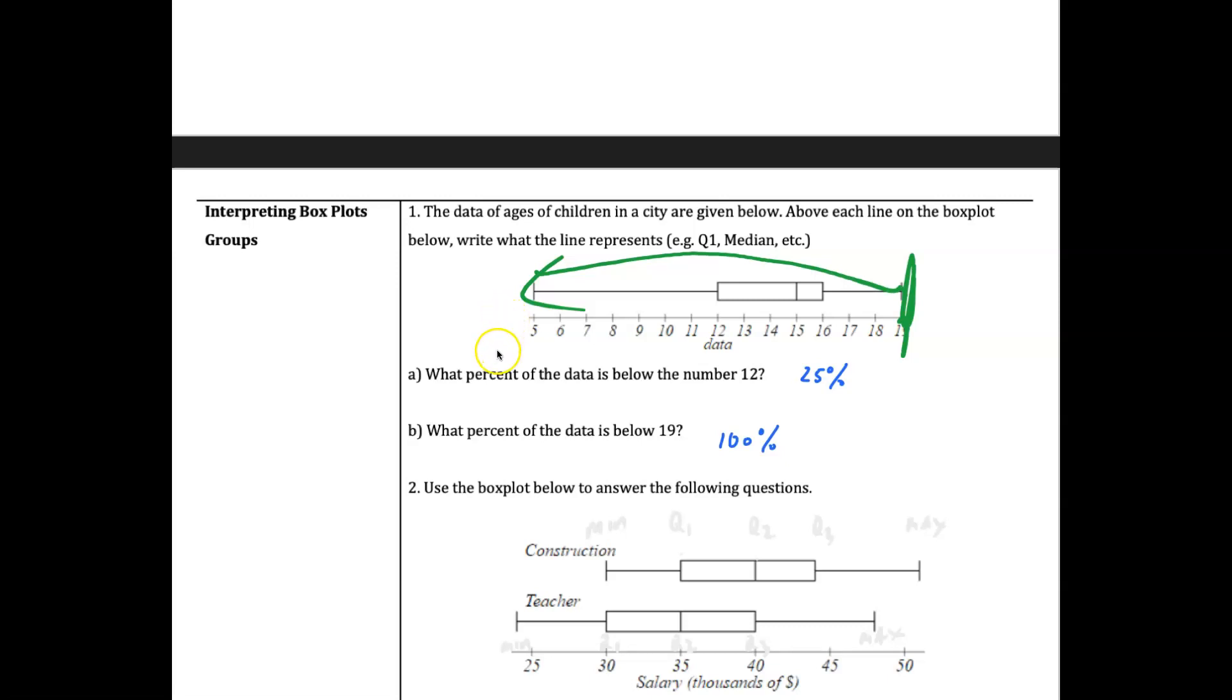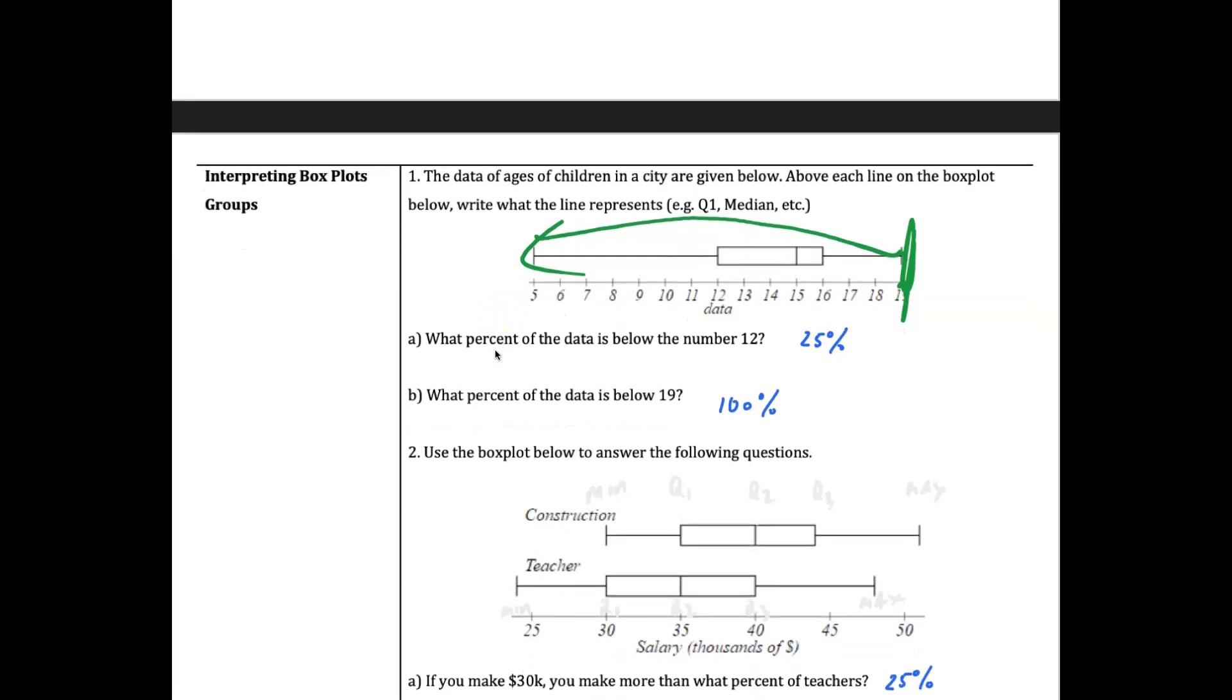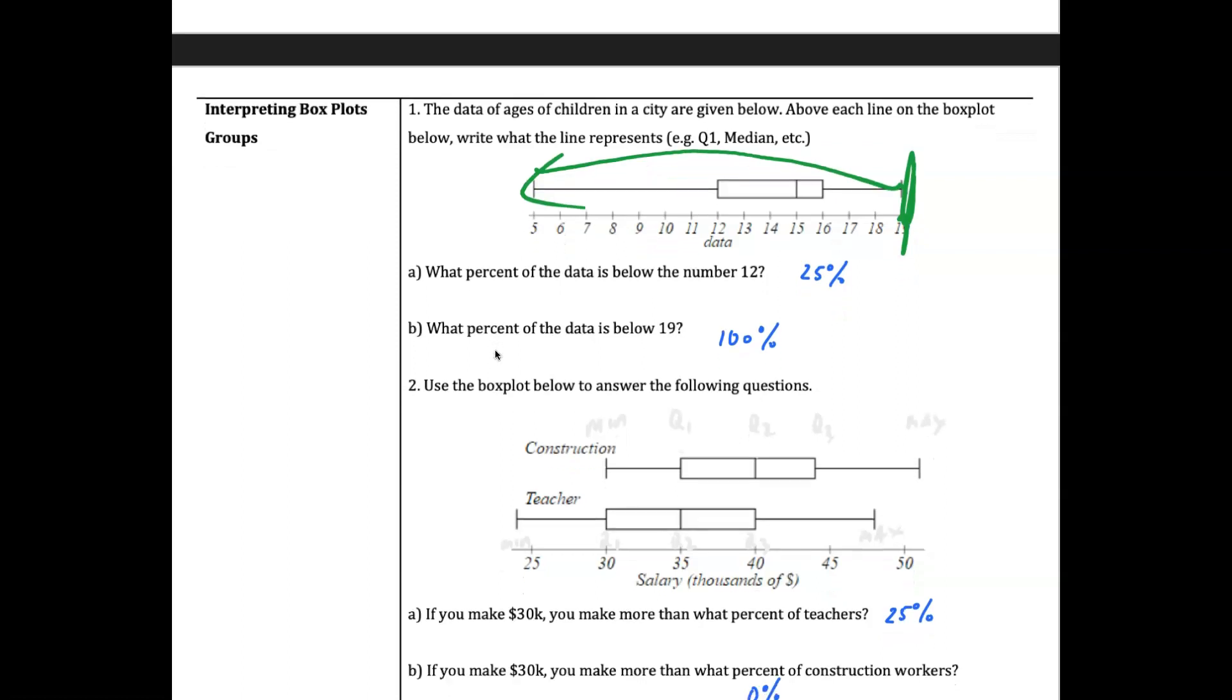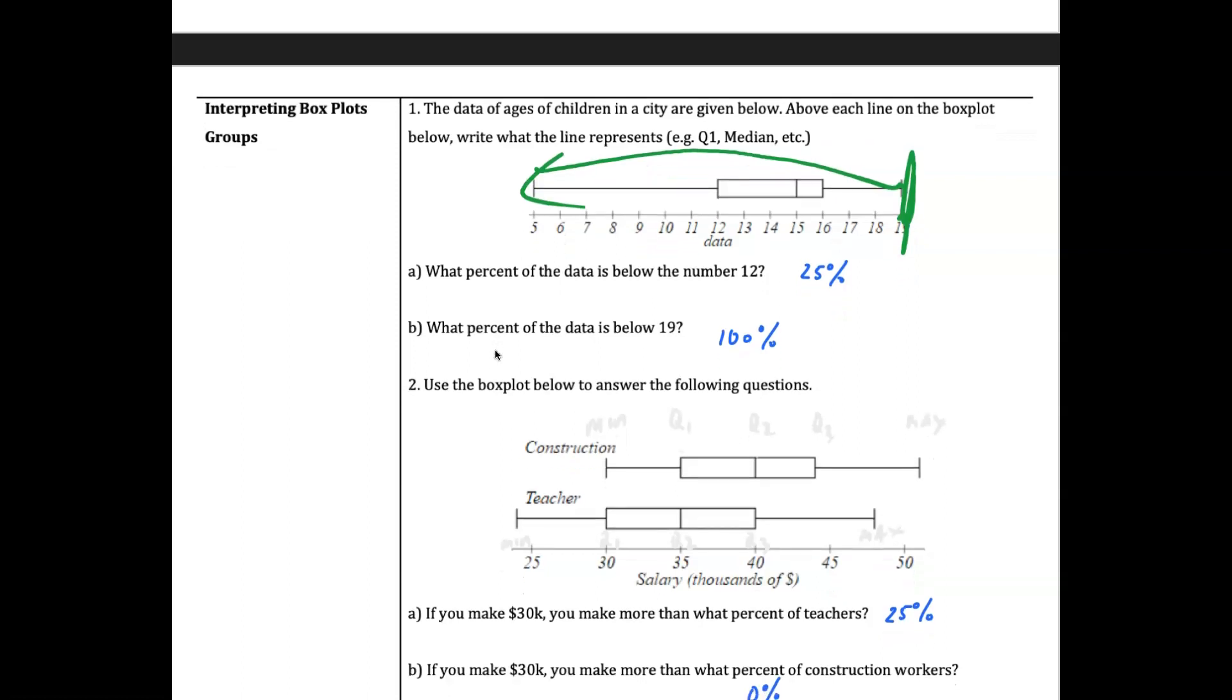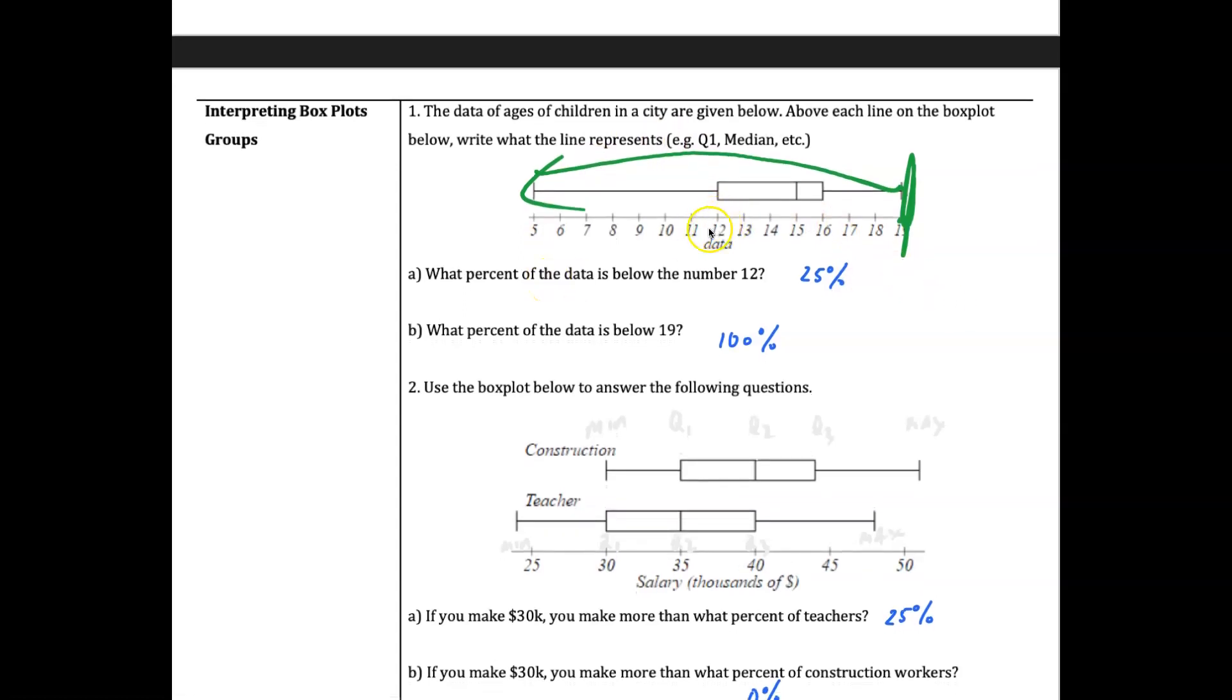Let's go ahead and take a look at this section on interpreting box plots. This gives us a chance to make sure you understand what the boxes mean and where the different quartiles, medians, and maximums appear on these graphs, which are called box plots. We're looking at sample data - the ages of children in a city are given below.